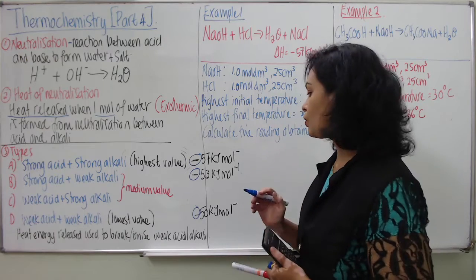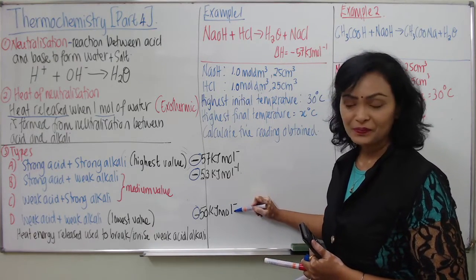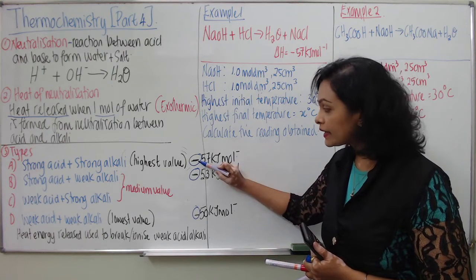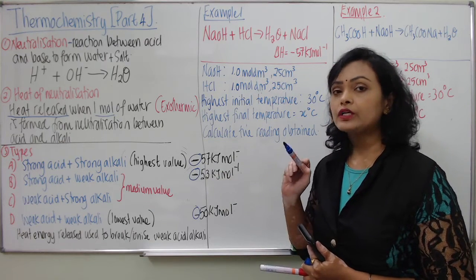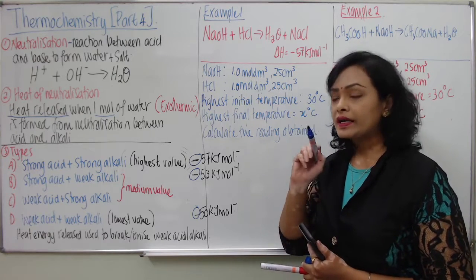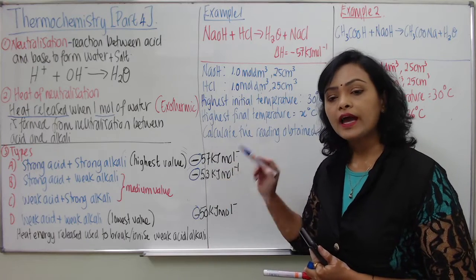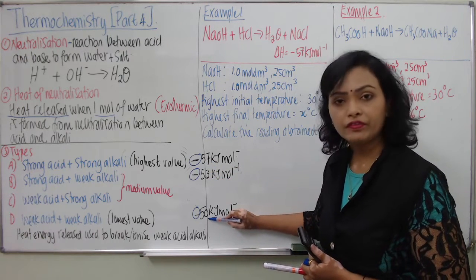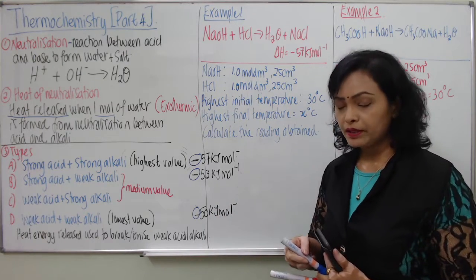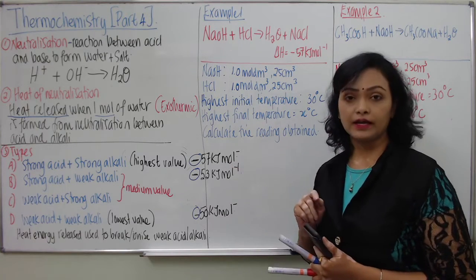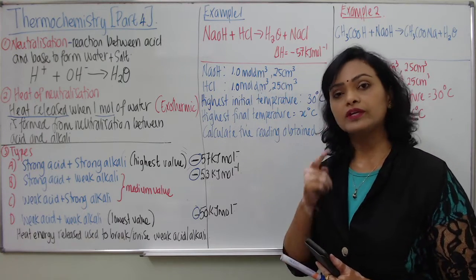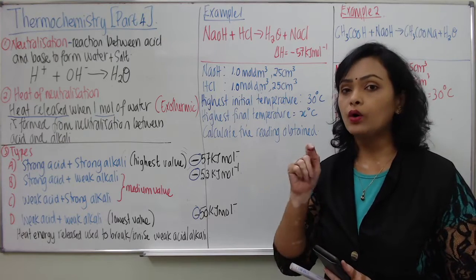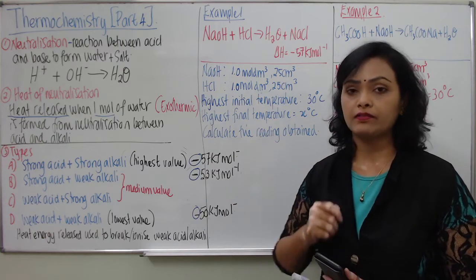If you follow the mathematical concept, you might say this is the highest value and this is the lowest value because of the negative sign. But please remember, the negative value in thermochemistry is mainly to show whether it is exothermic or endothermic. Regardless of the negative sign, students have to look at the numbers — 57 is higher than 53, and 53 is higher than 50. Please don't get confused with the negative sign; no need to arrange values according to the mathematical meaning of negative.